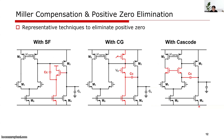As representative solutions for Miller compensation to eliminate the positive zero, we can use a source-follower-based feedback, or a common-gate stage in the feedback loop. Or we can combine this stage with the first-stage amplifier and then apply Miller compensation. We will discuss more about these techniques in the course.